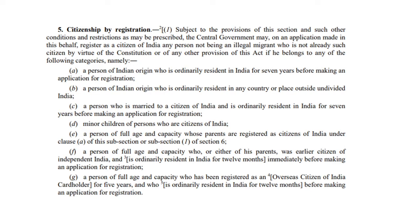Category 2: Persons of Indian origin who are resident in any country or place outside undivided India. Category 3: Persons who are or have been married to citizens of India and are resident in India and have been so resident for 5 years immediately before making an application for registration. Prior to the Citizenship Amendment Act of 1986, the clause read as: Women who are or have been married to citizens of India.